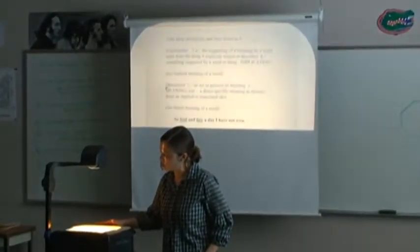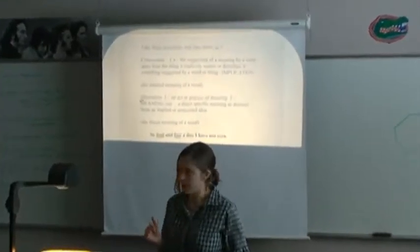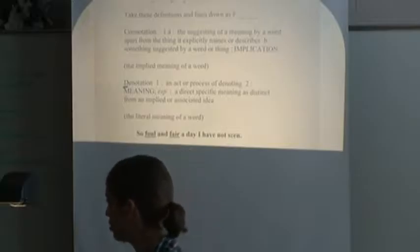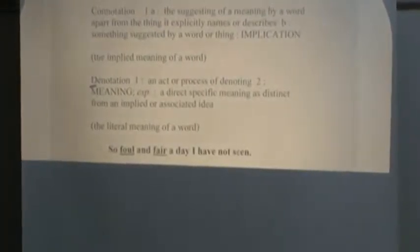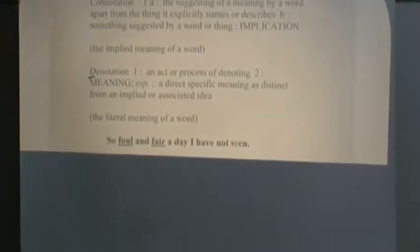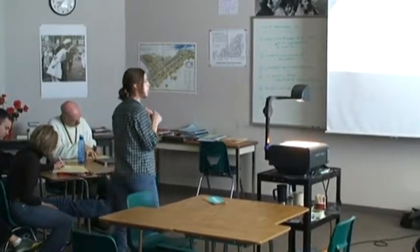Go ahead and copy down this one line: 'Foul and fair a day I have not seen.' The words foul and fair are underlined — please underline those. Try to figure out what the denotation is for each of those words and what the connotation is for each. What would the dictionary definition of foul be, what would the dictionary definition of fair be, and then what is their implied meaning?